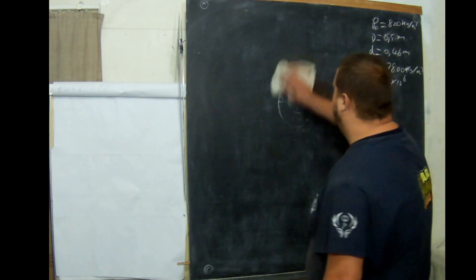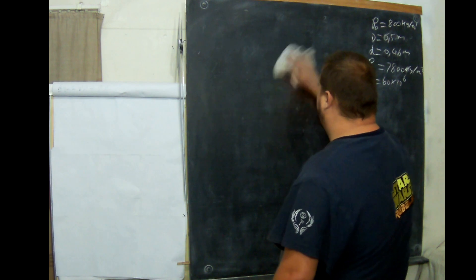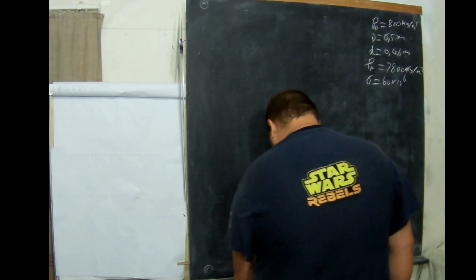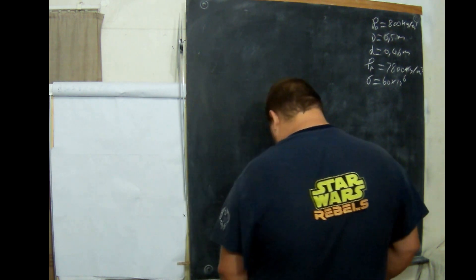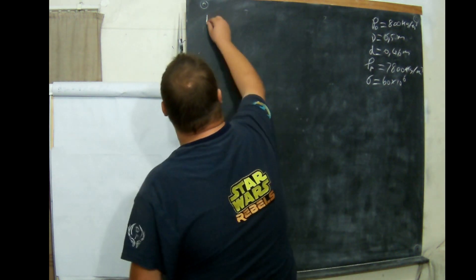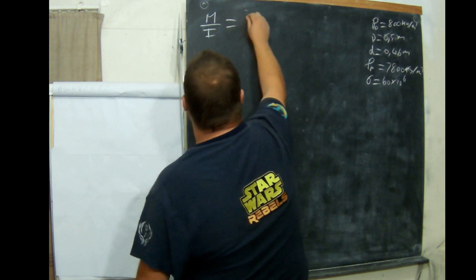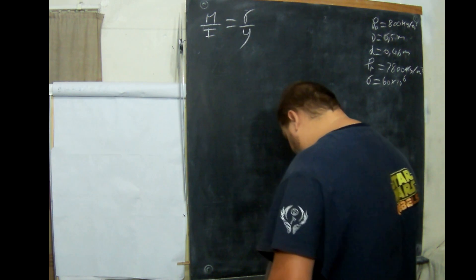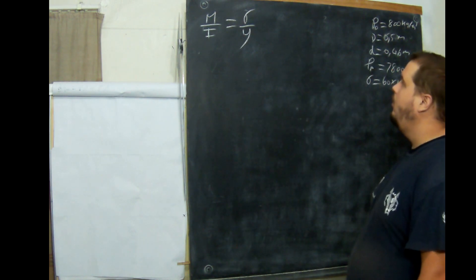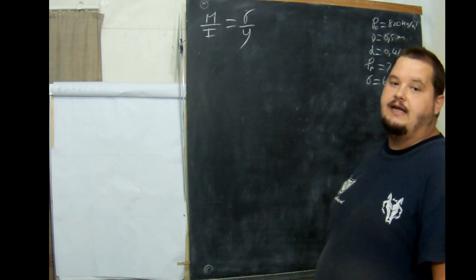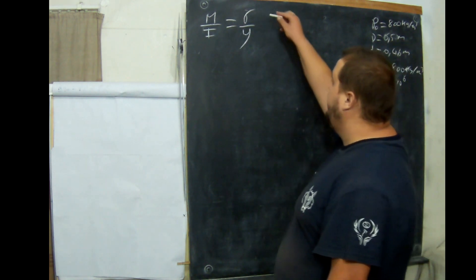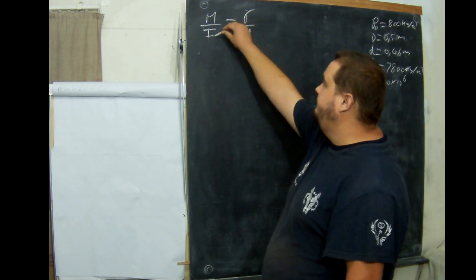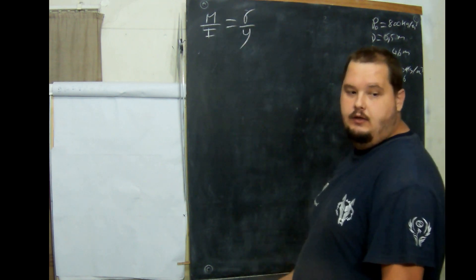What we're going to do now is calculate. We're going to use this formula: M over I equals sigma over Y. Let's see what we have and what we want to calculate. We only have sigma — we don't have I and we don't have Y.